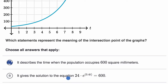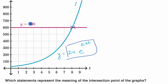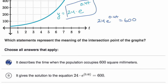The next choice says it gives the solution to the equation 24 times e to the 0.4t = 600. If you think about it, one curve is y = 24e^(0.4t) and the other is y = 600. The t value at which these two graphs intersect means both equal the same y value — meaning 24e^(0.4t) = 600. So I like this too. It gives the t value where this is true — that's the solution to that equation.